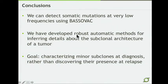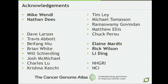In conclusion, we can detect mutations at very low frequencies using BASIVAC, our new caller, and we developed an R package for automatically inferring the subclonal architecture in tumors. We hope to release beta versions of both by the end of the year. The overarching goal of this research is to characterize these minor subclones at diagnosis rather than discovering their presence at relapse when it may already be too late to design appropriate treatments. I'd like to acknowledge Mike Wendel, who led the BASIVAC project, Nathan Dees for the clonality analysis, collaborators, the Genome Center, NHGRI, NCI, and the Cancer Genome Atlas.